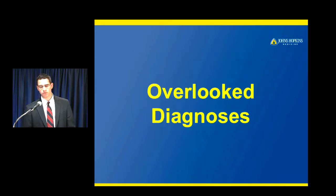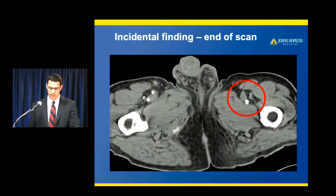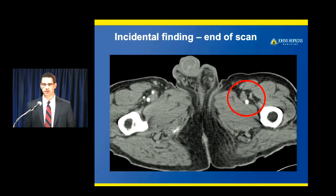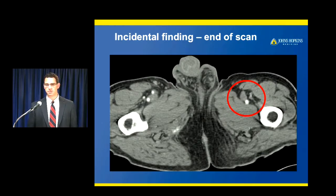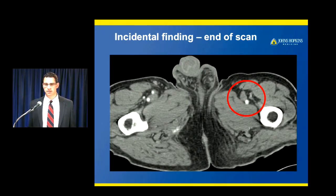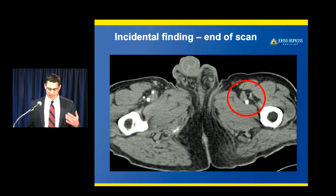My last category is overlooked diagnoses — probably one of the more common misses I see among residents and fellows working overnight. This is an edge-of-film, end-of-scan finding: SFA occlusion. We scan a lot of older patients with vascular disease and SFA occlusions are really common. If you miss them you probably won't kill the patient, but it's always good to mention — maybe the patient has claudication, maybe it represents an embolus from some other source. Always keep this in your routine search pattern when evaluating these scans.